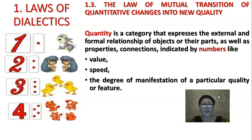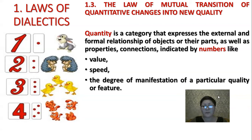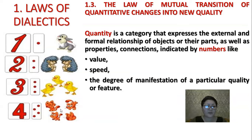What is quantity? Quantity is a category that expresses the external and formal relationship of objects or their parts, as well as properties and connections indicated by numbers — like value, speed, the degree of manifestation of a particular quality or feature. For example, one rabbit or one chicken, three rabbits or four cats. Different quantities express the external relationship between different things and phenomena.